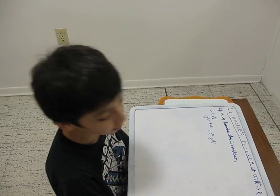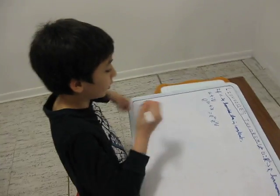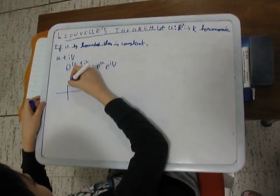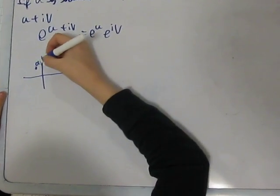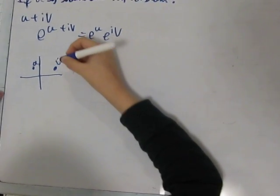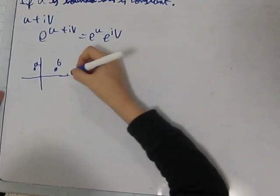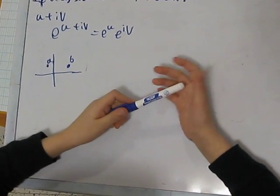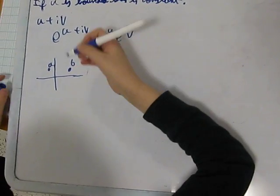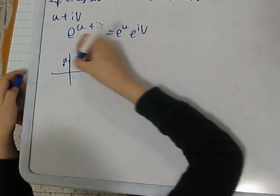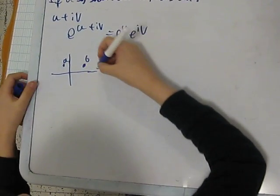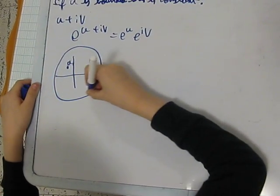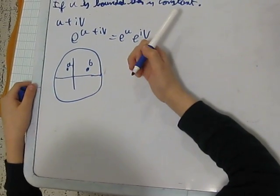How can we prove this? Let's consider any two points. Let's call it A and B. Well, we know the Cauchy integral formula, right? So let's consider a contour that encloses A and B. So, for example, a circle of radius R.